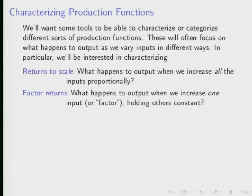We're going to think about two main ways to characterize production functions. The first question: if you have inputs like labor and capital and you double the amount of both, what happens to total production? Does output more than double, exactly double, or less than double? Consideration of these questions is what we'll call returns to scale. The second question involves doubling one input while holding the other fixed, which leads to factor returns.